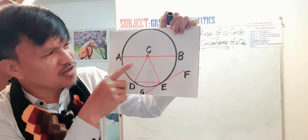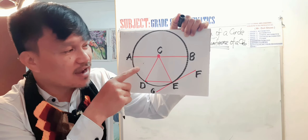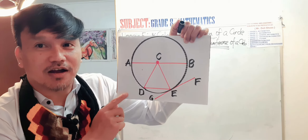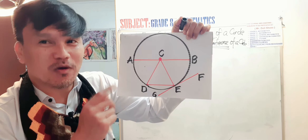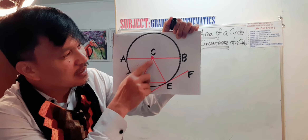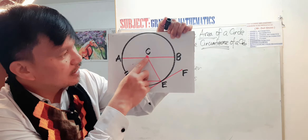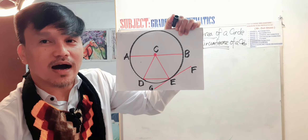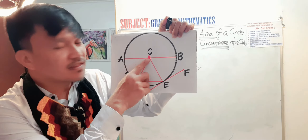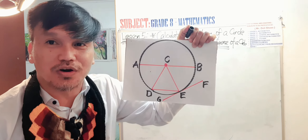Can you name the other radii in this diagram? Apart from C-E, other radii are C-B, C-D, and C-A. Why? Because a radius is a line from the center of the circle to any point on the circumference of the circle.